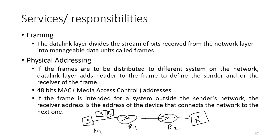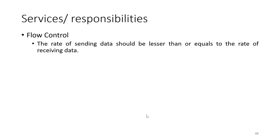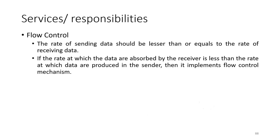The next service is flow control. Flow control means the rate of sending data should be less than or equal to the rate of receiving data. If the rate at which data are absorbed by the receiver is less than the rate at which data are produced by the sender, then the data link layer implements a flow control mechanism.